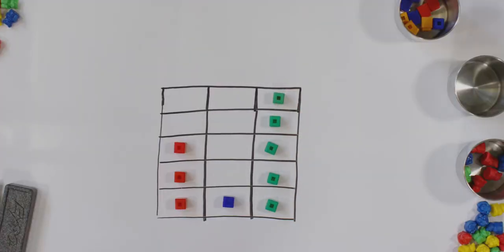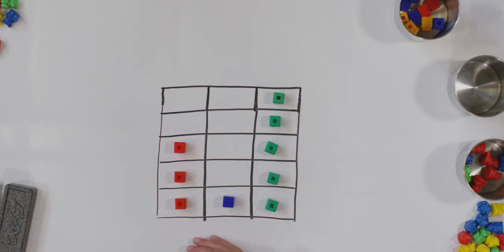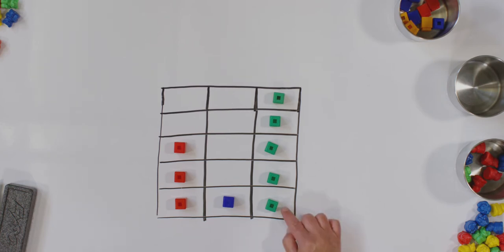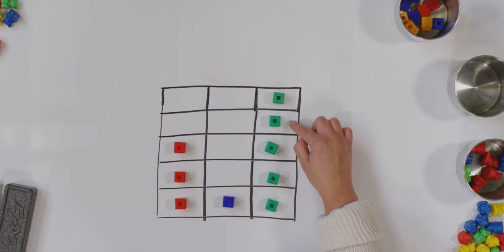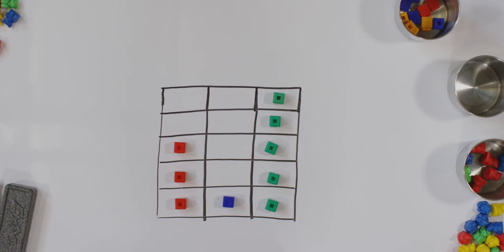We did it. Now looking at our cubes, can you tell which one we have the most of? Did you say green? Is that what you guessed before? You're right. How do you know we have the most greens? Tell your teacher what you think. I think we have the most greens because it goes all the way to the top and the others don't. Is that what you thought too? Good. Let's count how many greens we have. Always start counting from the bottom. One, two, three, four, five. We have five green cubes.